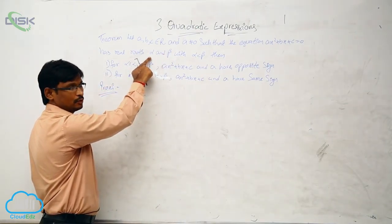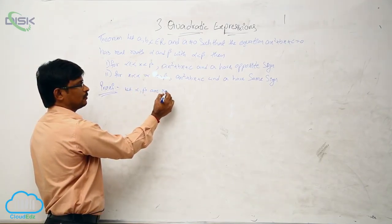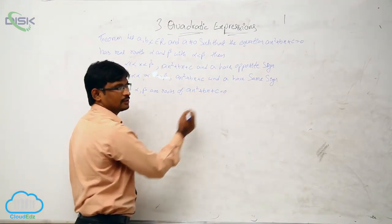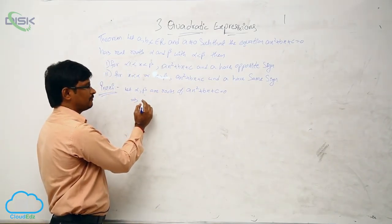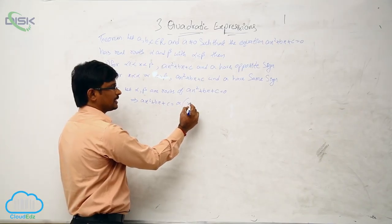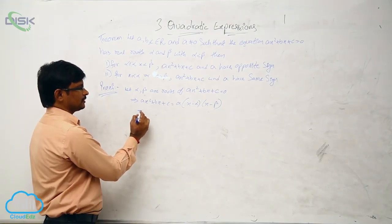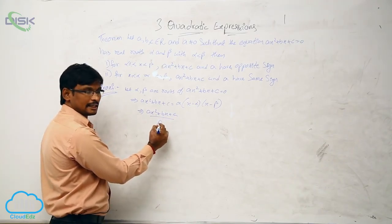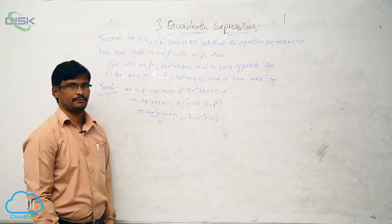For this one, how many roots are given? Two roots. Let alpha and beta be the roots of the quadratic equation ax² + bx + c = 0. We know that if the roots of the quadratic equation are alpha and beta, then we can write ax² + bx + c = a(x − α)(x − β). That implies (ax² + bx + c)/a = (x − α)(x − β).